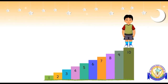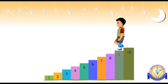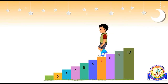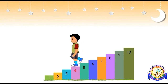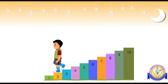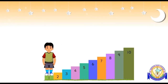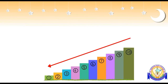Here is our friend Rahul again. He is on step number ten and has to come down to step number one. He comes down to step nine, then eight, seven, six, five, four, three, two, and finally step one. As he comes down each step, he is descending — moving to a smaller number than the previous. When numbers are arranged from the greatest to the smallest, they are in decreasing order, or descending order.